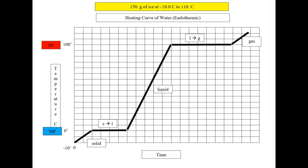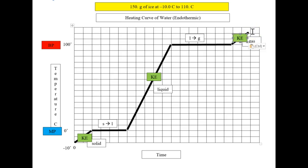Now let's label the various energy changes. Since temperature is the average kinetic energy, the solid line shows an increase in kinetic energy. The liquid line also shows an increase in temperature, so that is also an increase in kinetic energy. The gas line likewise shows a temperature change from 100 to 110 — kinetic energy. At the melting point (zero degrees), there is no temperature change but the ice is melting, so heat is involved — that heat is potential energy. Similarly, at the boiling point (100 degrees), the phase change from liquid to gas requires heat, which is also potential energy.